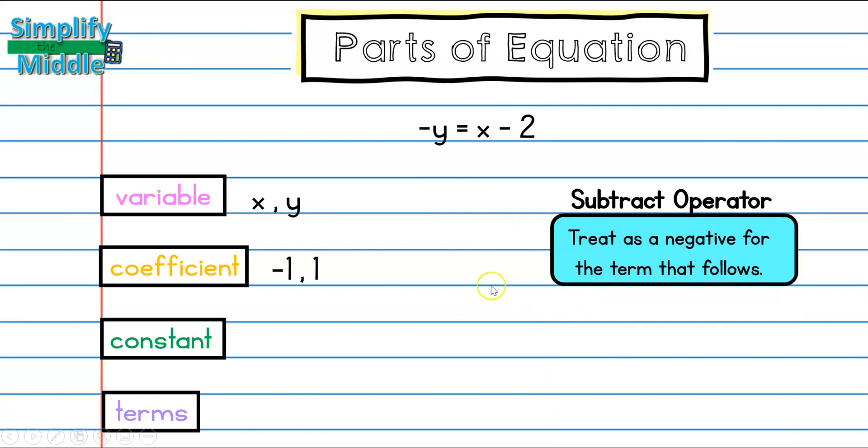Something else to keep in mind is my subtraction operator for my constant this time. So my constant is actually going to be negative 2, not just 2. And then finally, I have three terms here, negative y, x, and negative 2.